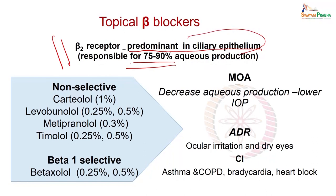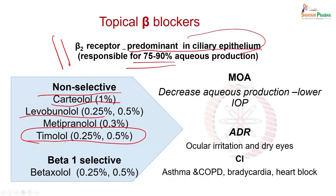There are certain agents used: one is a non-selective agent — carteolol 1%, levobunolol — and more commonly used is timolol. Timolol is the most commonly used drug but has the limitation of requiring repeated administration (0.25% to 0.5%). Beta-1 selective betaxolol is also used. Mechanism of action: decrease aqueous humor production, lower intraocular pressure. The major adverse reaction is ocular irritation and dry eye.